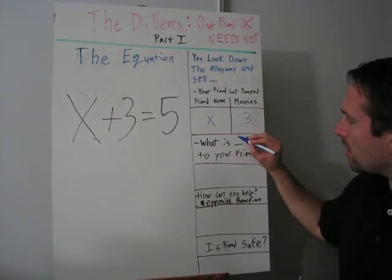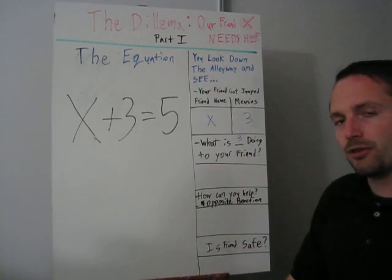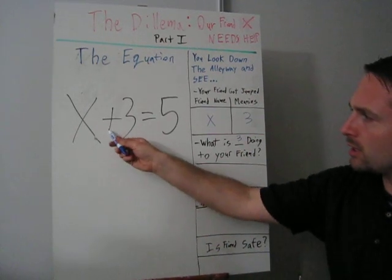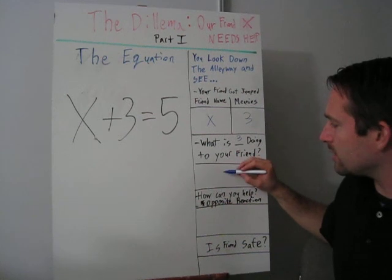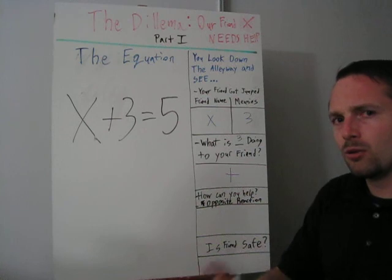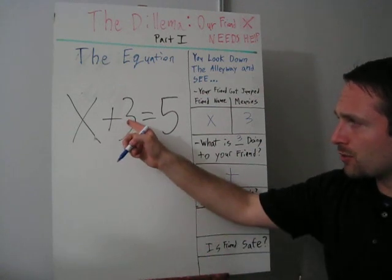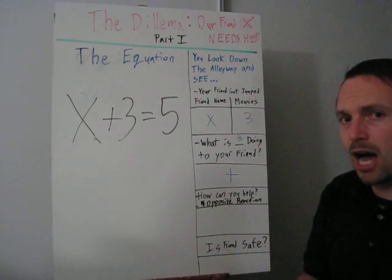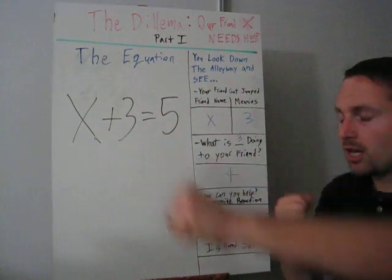What is 3 doing to your friend? We look, and we see that the action he's doing is adding. How can you help? Well, if 3 is adding, you can do the opposite reaction against that 3.